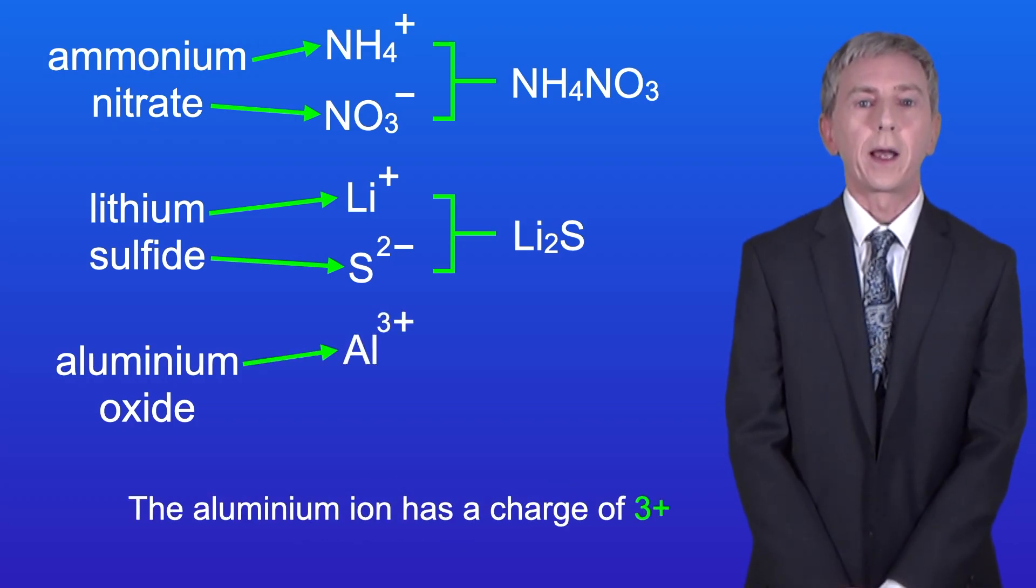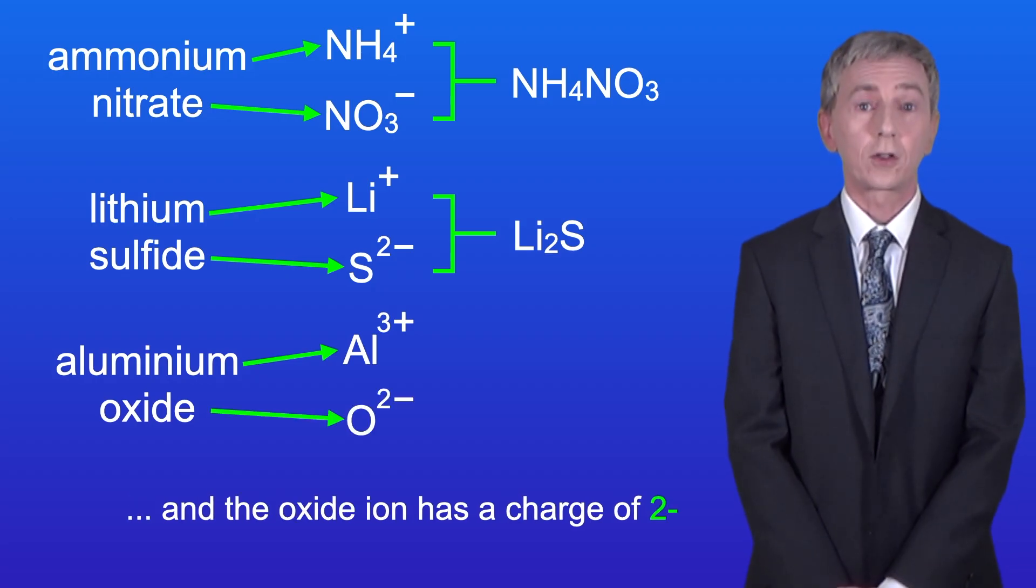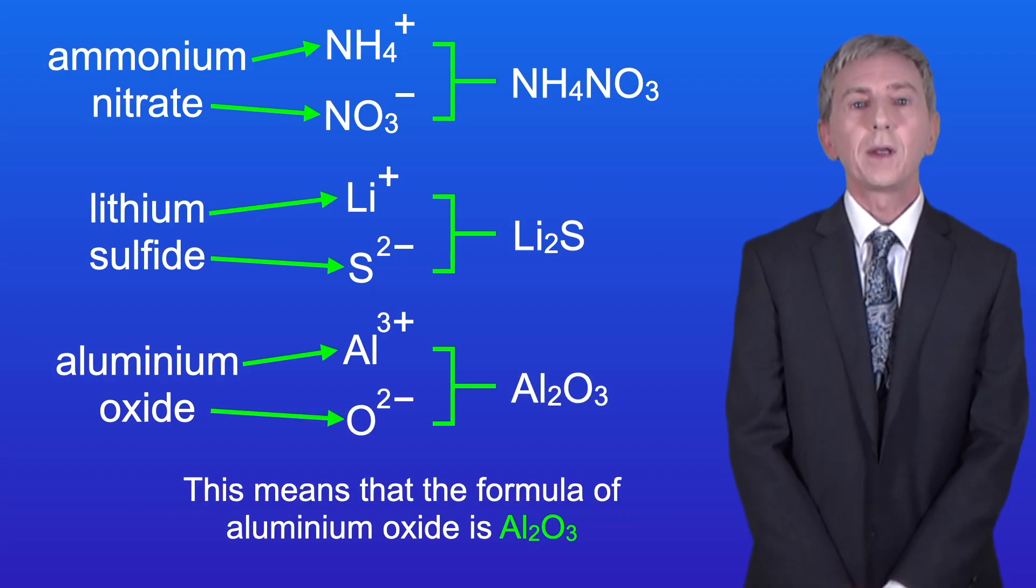And finally the aluminium ion has a charge of 3+ and the oxide ion has a charge of 2-. This means that the formula of aluminium oxide is Al2O3.